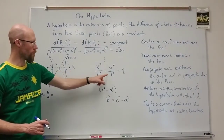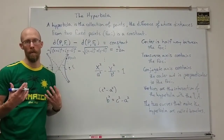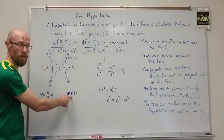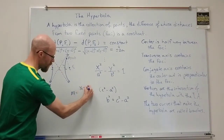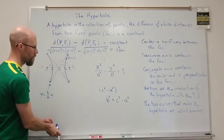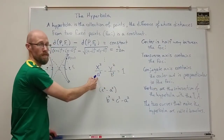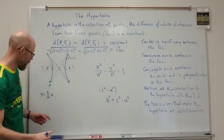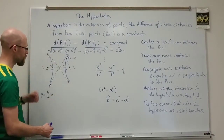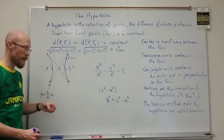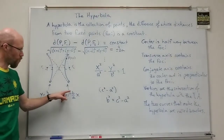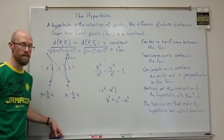An easy way to remember the slope: take the constant that corresponds to Y and divide by the constant that corresponds to X. For the negative asymptote, it's y = −(B/A)x — same steepness but negative slope. So those are your two oblique asymptotes for the horizontal case.